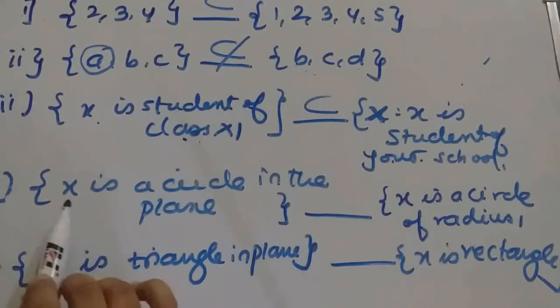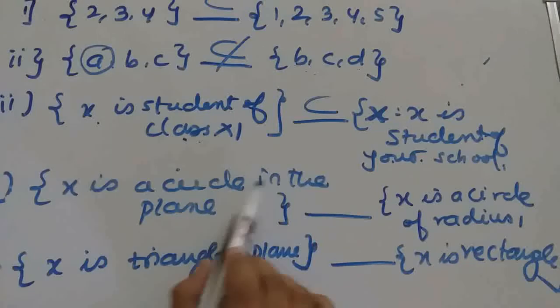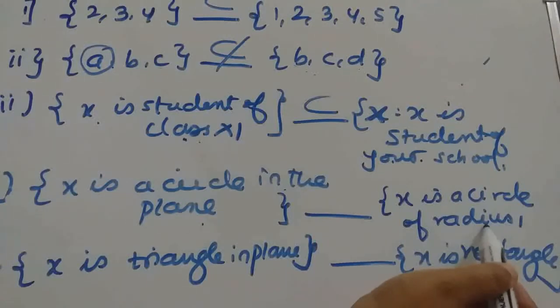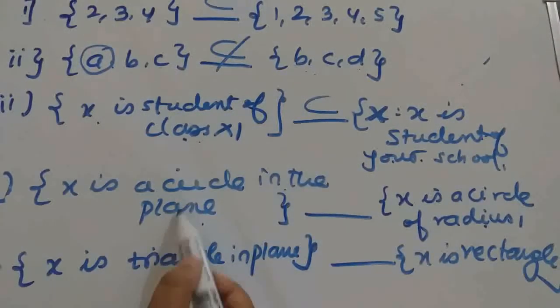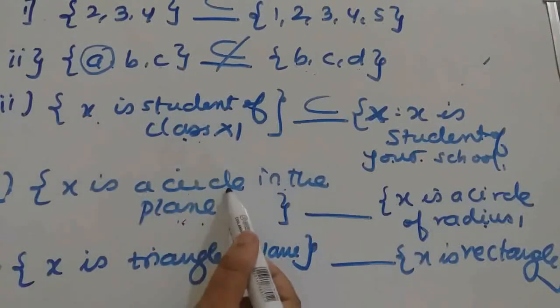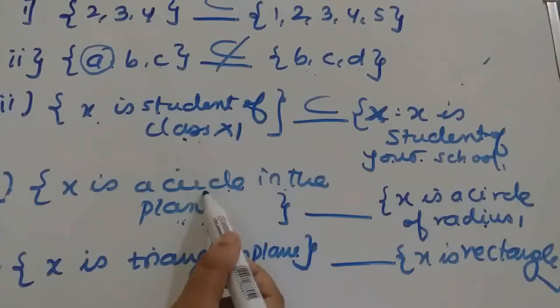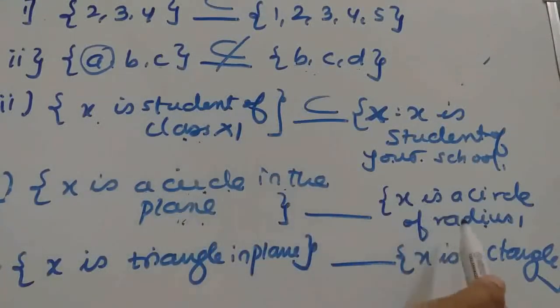Now next example: X is a circle in the plane, and X is a circle of radius 1 in the same plane. Here, condition is not given about the diameter or radius. X can be a circle of any radius. So what about if it will be a circle of radius 2?